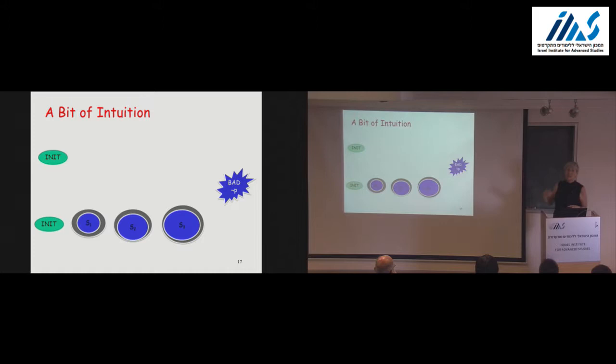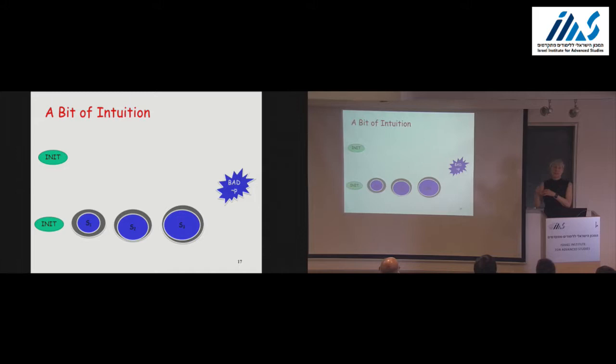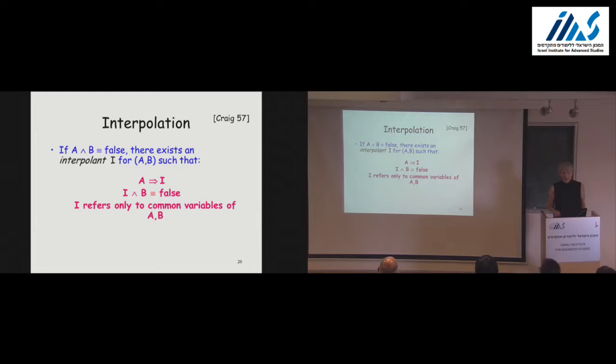What happens if with the approximation we hit a bad state? It might be spurious, because it might go through states that are not really reachable. When we find such a counterexample, it might not be real — we call it spurious. This is why we still use bounded model checking as our tool for finding real counterexamples, and we use the interpolation to keep track of what we have already seen.